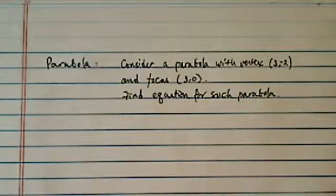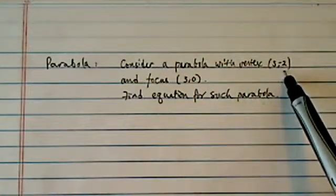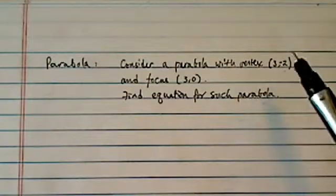Hi there, this is Dr. Pan, recording from Tucson, Arizona. Today we're looking for equation for a parabola such that the vertex is at (3, -2) and focus at (3, 0).